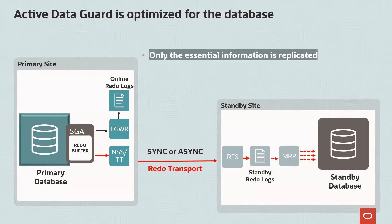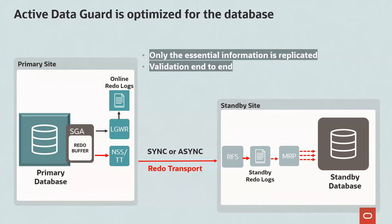Thus, only the essential information is replicated to the standby side, with a huge reduction in data volume sent across the network. This reduces network bandwidth requirements significantly and can reduce the overall network cost. Oracle Database Recovery Processes perform continuous validation as changes are applied to the standby. This validation uses knowledge of Oracle redo and data block structures to check for physical data corruptions, logical intra-block corruption, and lost write corruption to ensure the highest level of isolation between primary and standby.